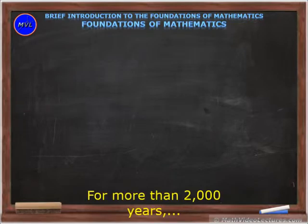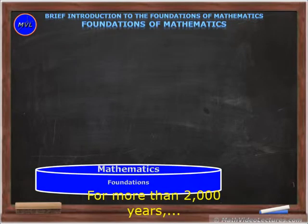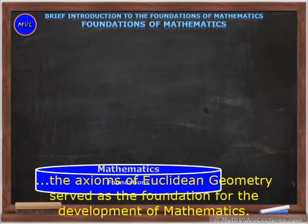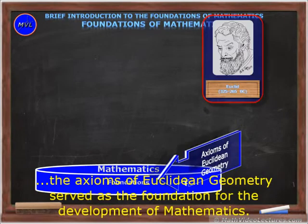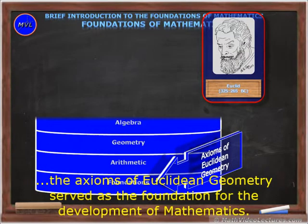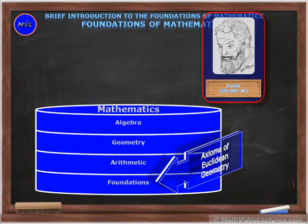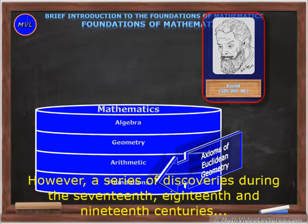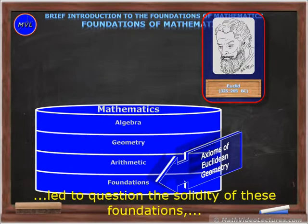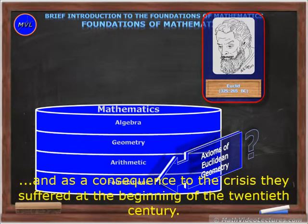For more than 2,000 years, the axioms of Euclidean geometry served as the foundation for the development of mathematics. However, a series of discoveries during the 17th, 18th and 19th centuries led to question the solidity of these foundations, and as a consequence to the crisis they suffered at the beginning of the 20th century.